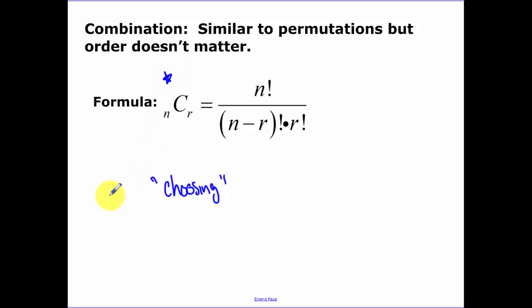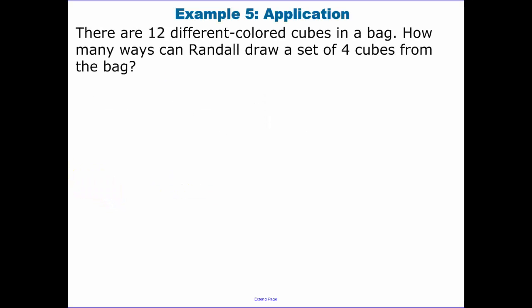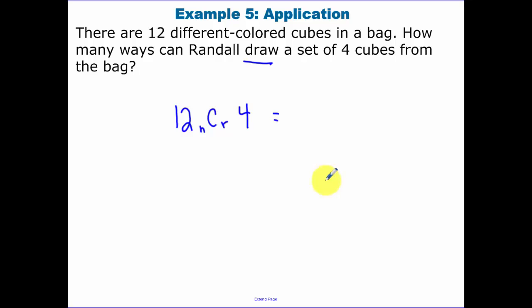There are 12 different colored cubes in a bag. How many ways can Randall draw a set of four cubes? He's choosing — that's why I think of combinations as choosing. It's 12 NCR 4. You don't need to memorize the formula; just plug it into your calculator. The answer is 495.